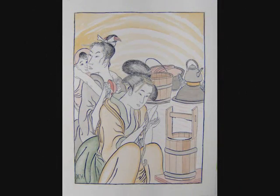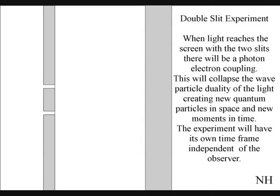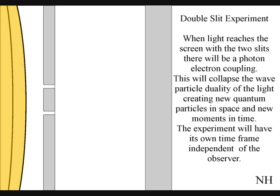The best way to see this happen directly with light is in the two-slit experiment. The light will expand in all possible directions as a wave particle function of quantized wave fronts. When the wave function reaches the screen with the two slits, the photons will react with the electrons of the screen. This will collapse the wave-particle duality of the light.